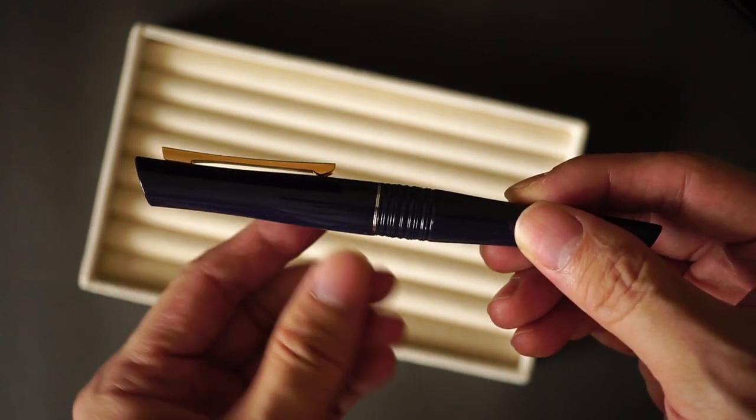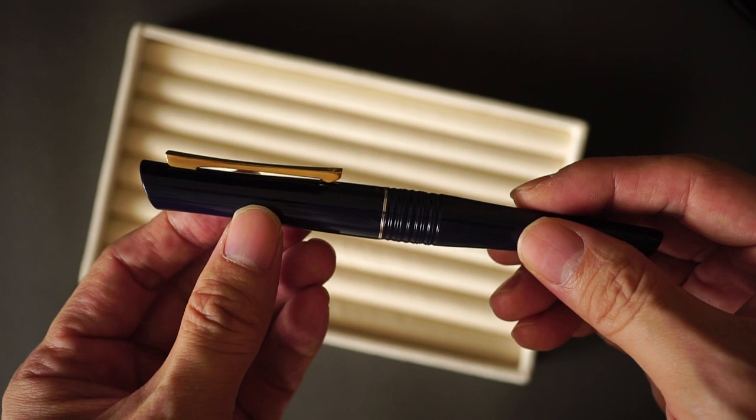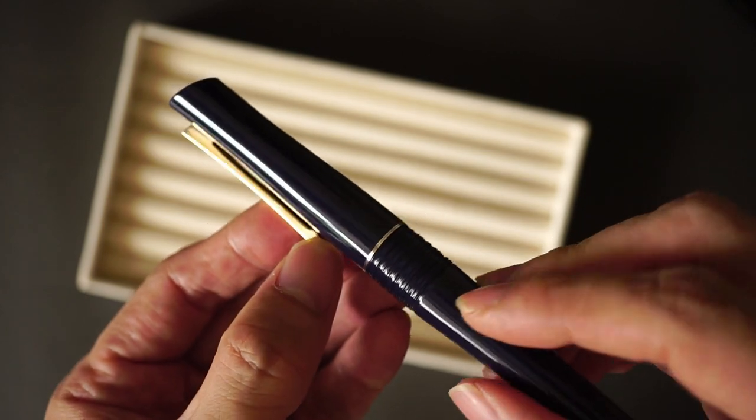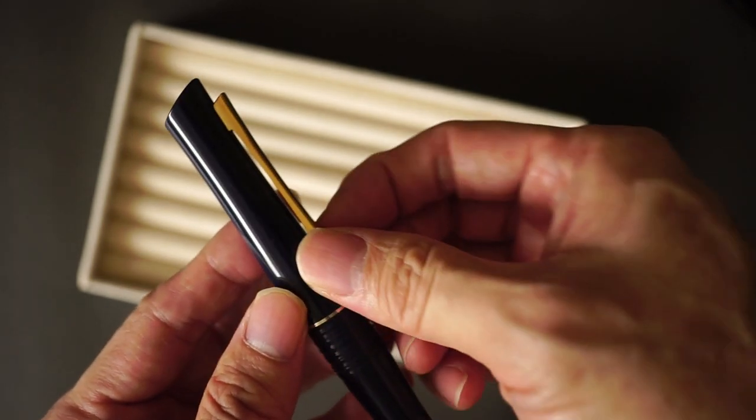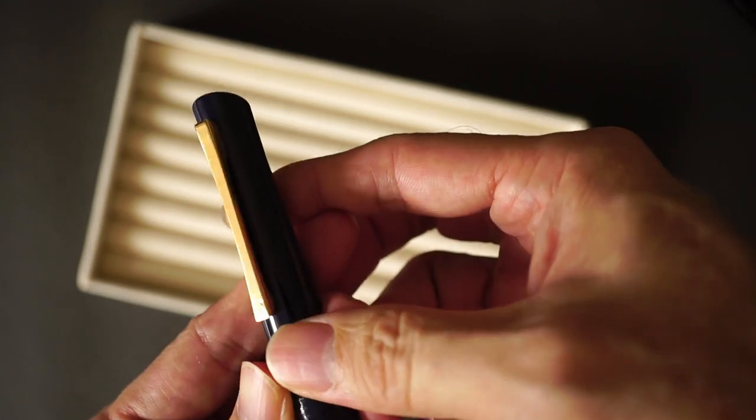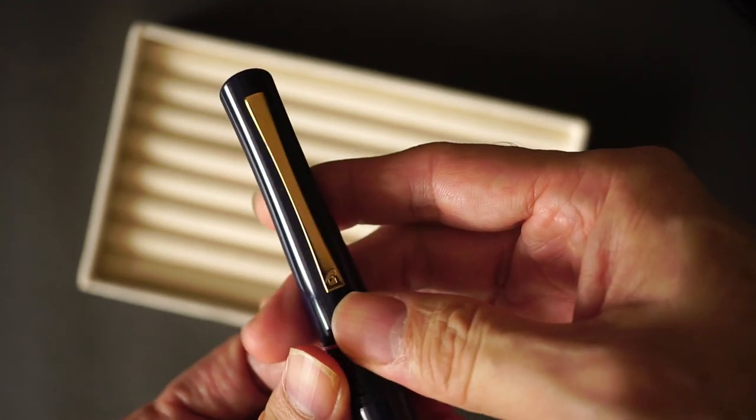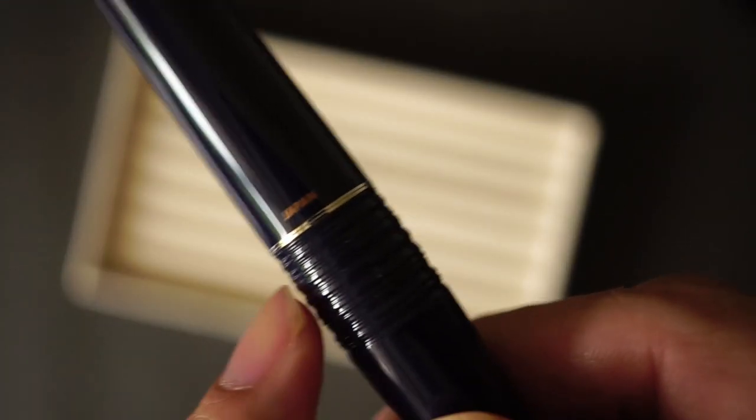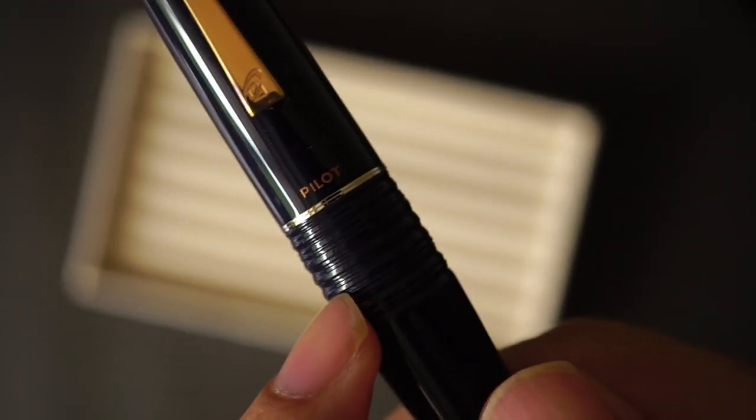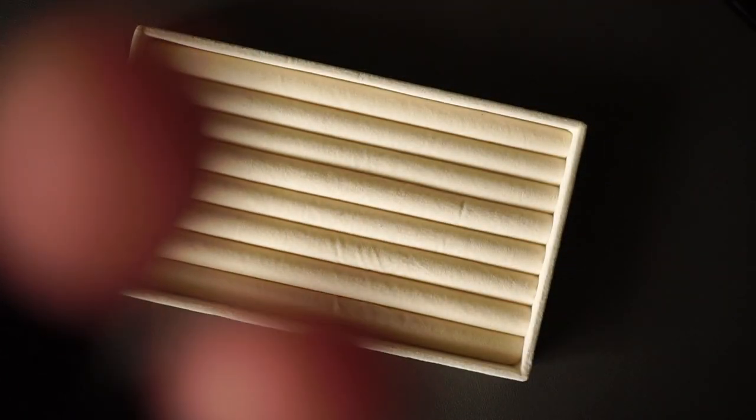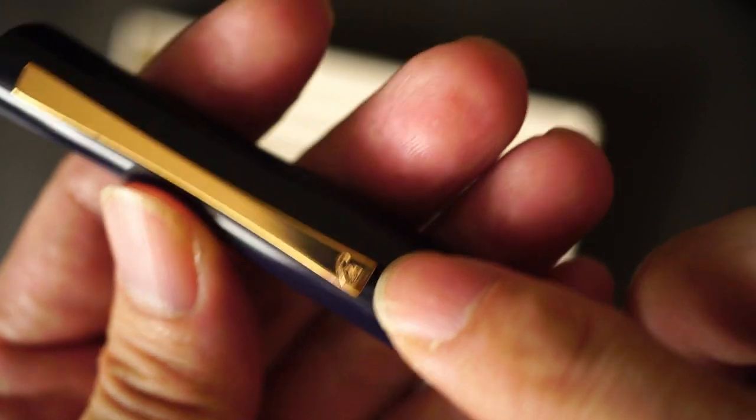This part of the pen, you can see that it's kind of concave slightly. And the clip obviously has probably the most over-designed or heavily designed clip you'll ever see. The clip itself has a little bit of spring to it. It's a very beautiful colour, like a rose gold. On the middle of the cap band, it says Japan and Pilot. There is a tiny logo down here, which I believe is the Pilot logo on the clip.